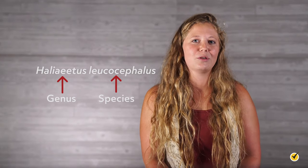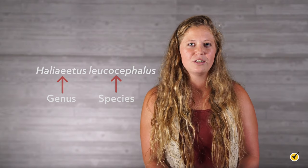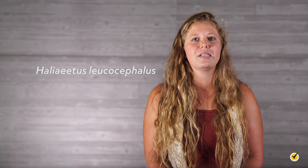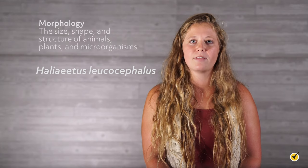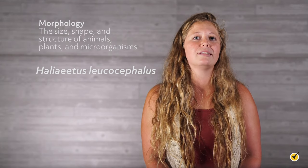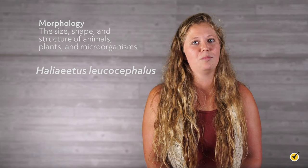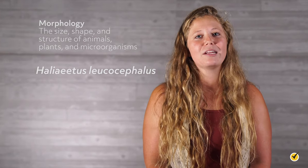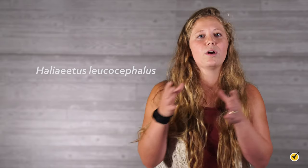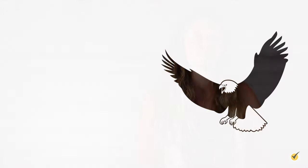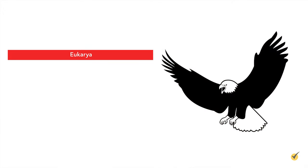So we know they're Haliaeetus leucocephalus, but what about the rest of their lineage? It is largely based on their genetic similarity to other organisms, but we also know that genetics lead to distinct morphology. Keeping morphology in mind can be a good way to help you memorize and understand the breakdown of how things are organized. Let's go through the entire classification system for bald eagles together, starting at the domain and working our way down. Since they are eukaryotes, they belong to the eukarya domain. For kingdom, they are part of the animalia taxon because they are multicellular, their cells don't have a cell wall, and they ingest food instead of being an autotroph that makes its own food.